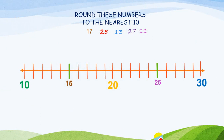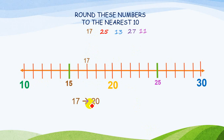Now let's see some examples: round these numbers to the nearest ten. I have 17, 25, 13, 27, and 11. The first number is 17. I place it on the number line and you can clearly see that it is present between 10 and 20, so I'm going to change it to 20 because 17 is near to 20.